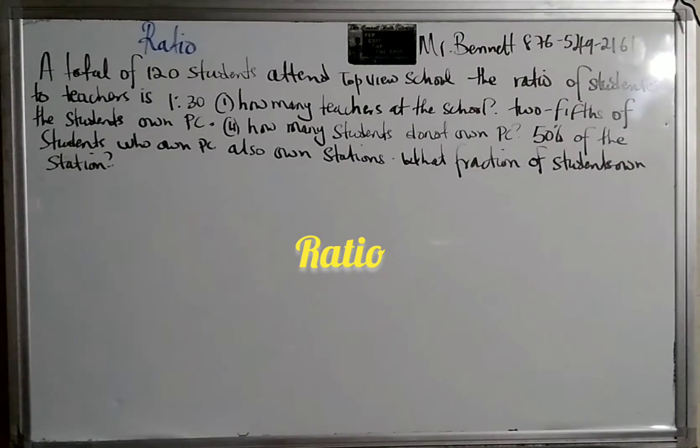Alright guys, so this is another ratio question as requested. It says a total of 120 students attend Topfield School. The ratio of student to teacher is 1 to 30, and they ask us to find how many teachers are in the school.